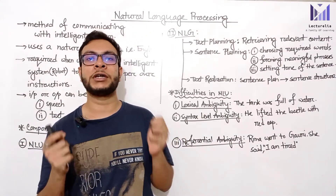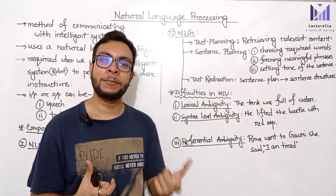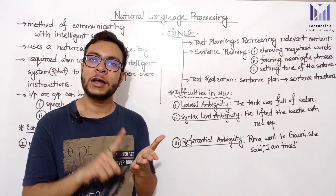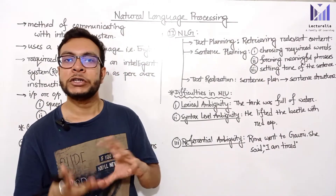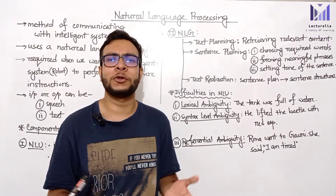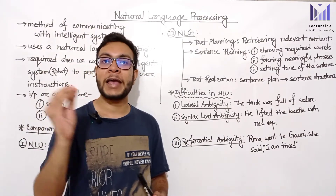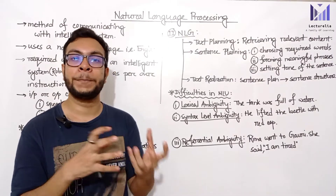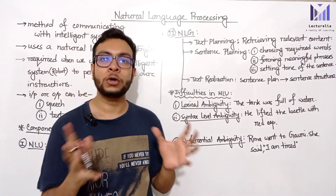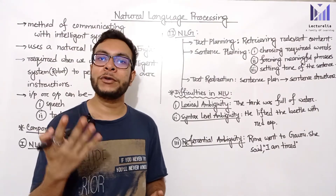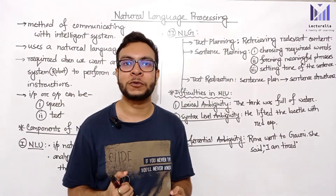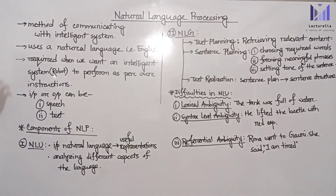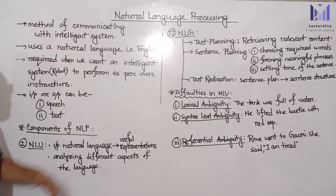So that is what we got from Google. You can convert text, understand content, search a database, and use the results. According to Wikipedia, this is the definition of Natural Language Processing. It is a method of communicating with an intelligent system using a natural language like English.